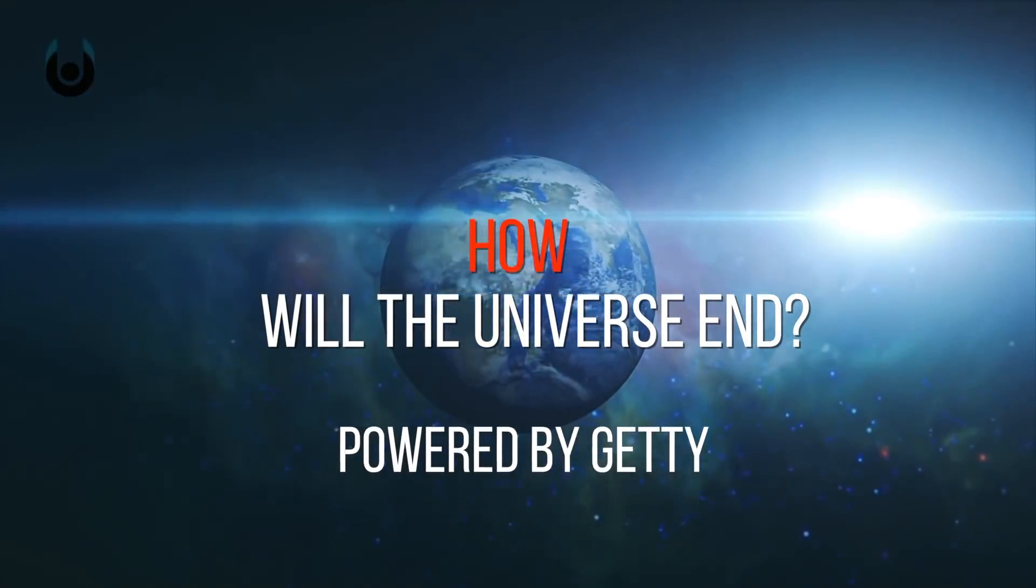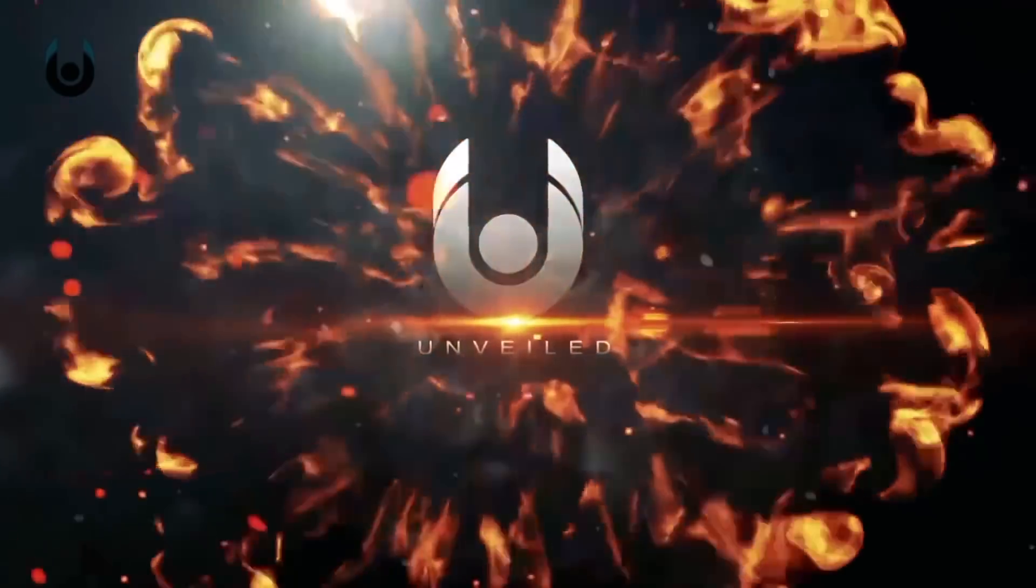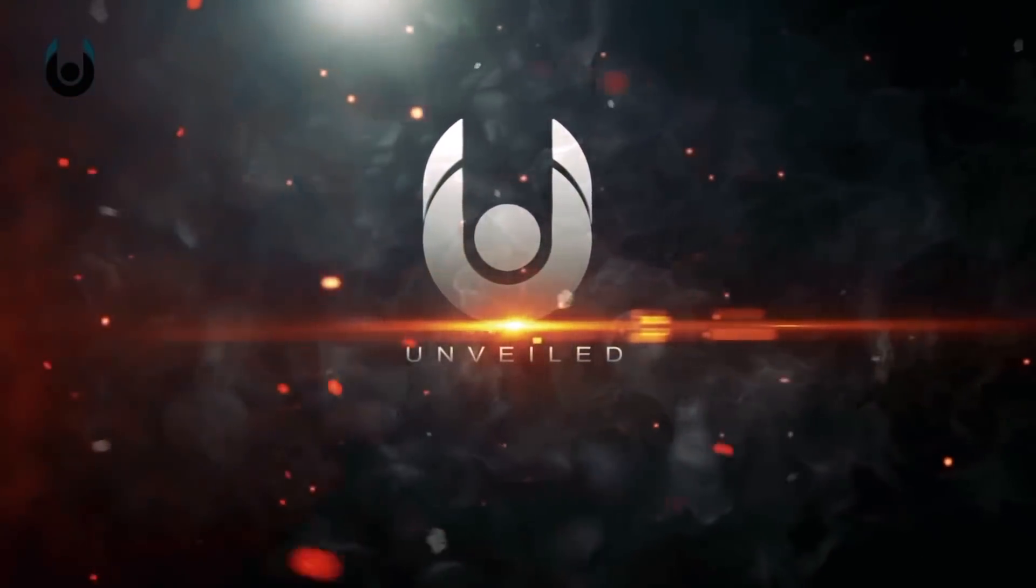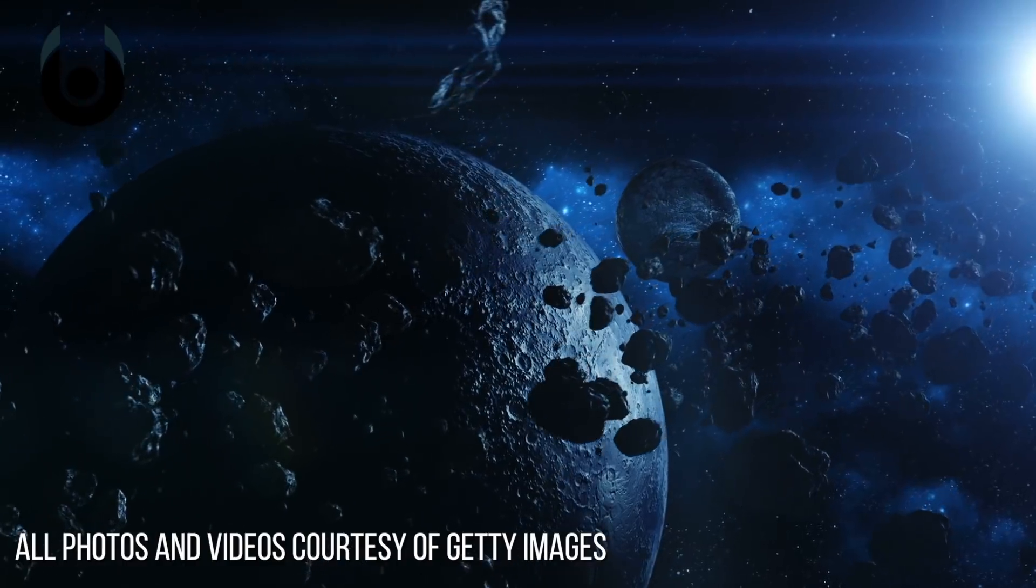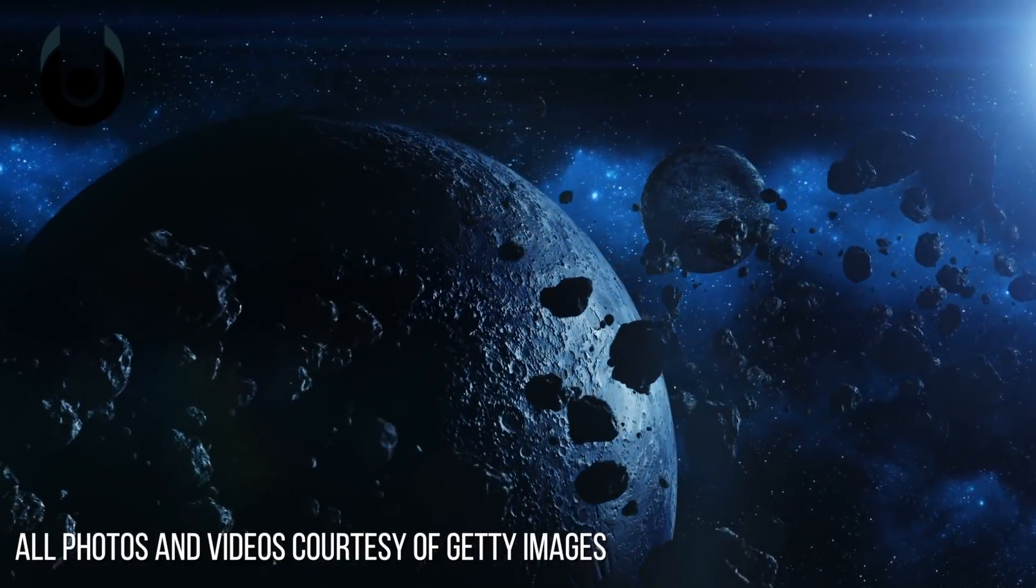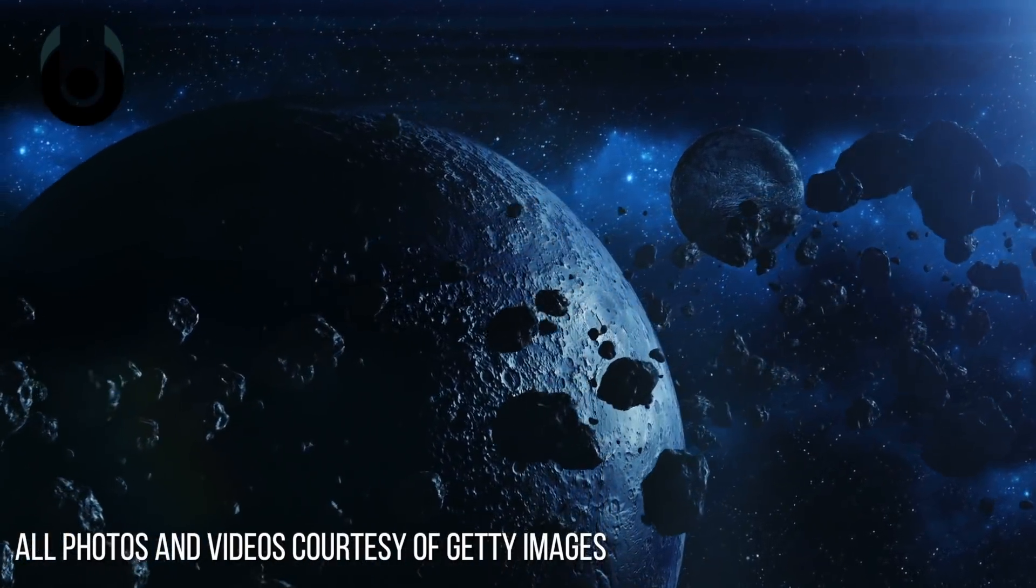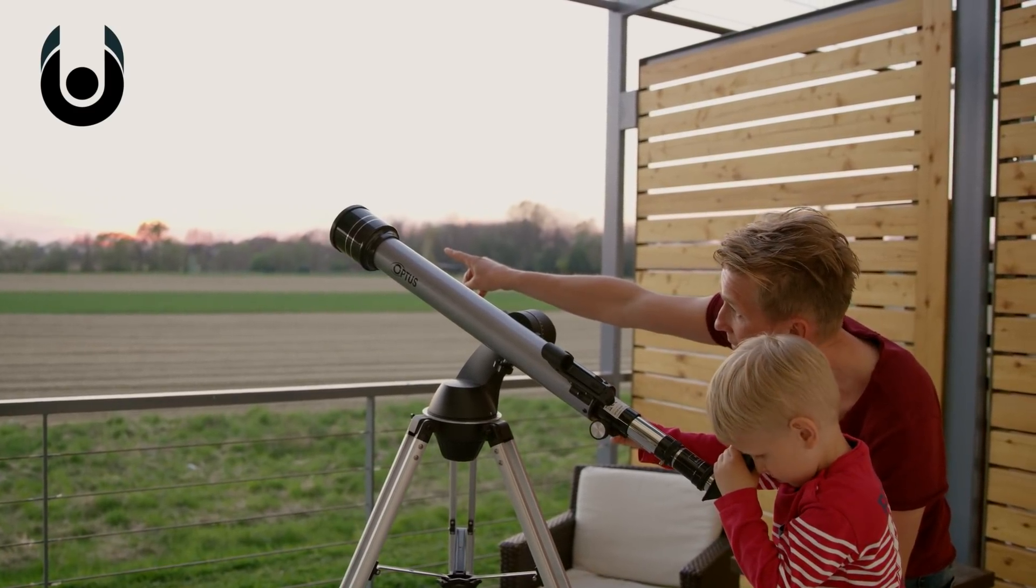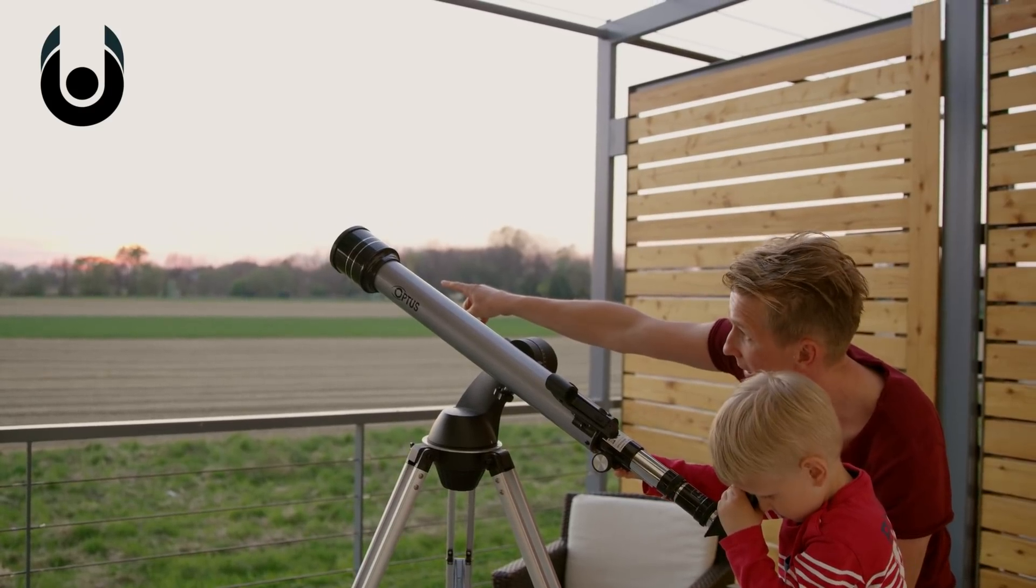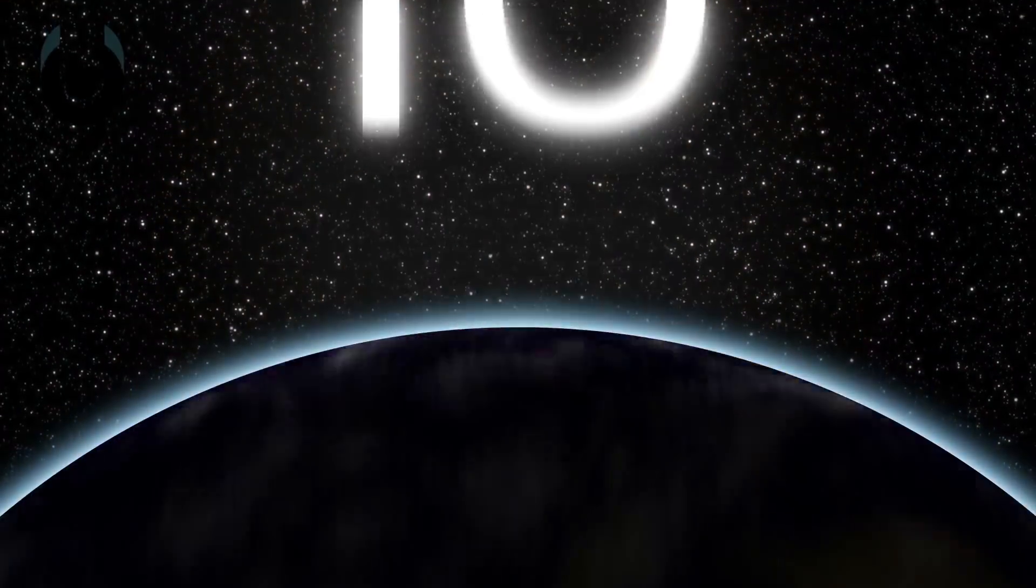How the Universe Will End. While it may seem as if the universe will go on forever, it more than likely has an expiration date. Luckily, you won't have to worry about it, and neither will your grandkids. Estimates on when the end of all things will actually occur range from 100 trillion to just 2.8 billion years away.